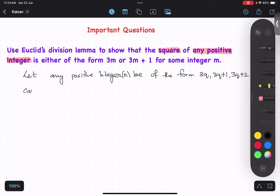So case number 1, when N equals to 3Q. Now question is saying square, so when we are doing square, we will square both sides. N square equals to 3Q square, 9Q square.